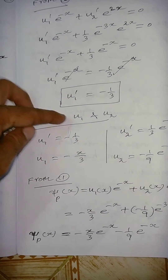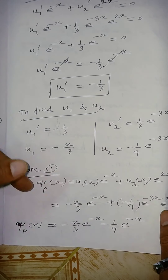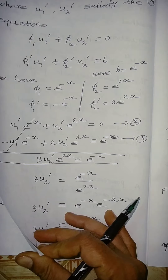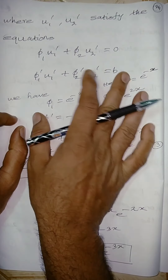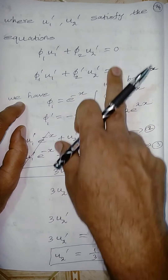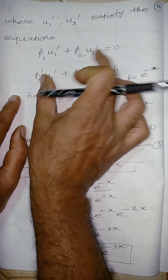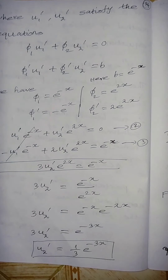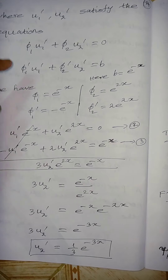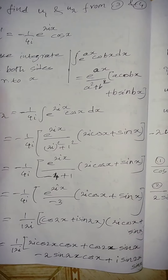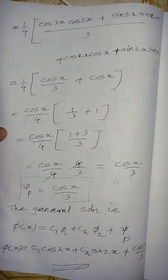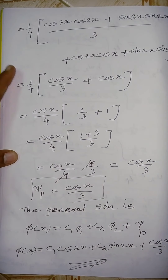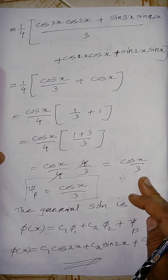Both problems use the same method — the variation of parameters / Cramer's rule approach — finding u₁ and u₂ by solving the simultaneous equations. This concept makes the solution easier. Thank you very much for watching the full video.